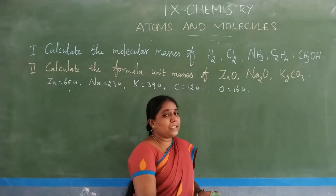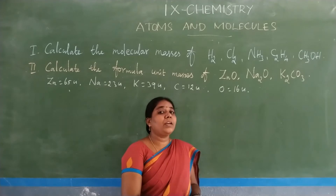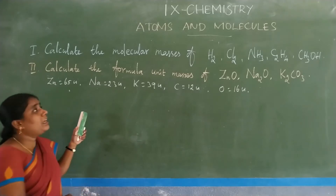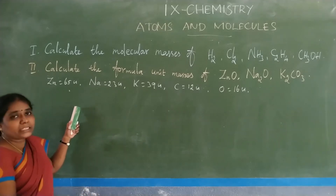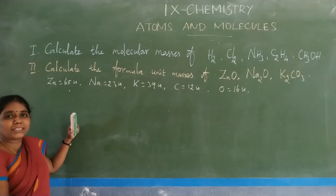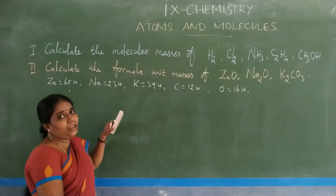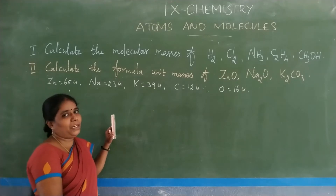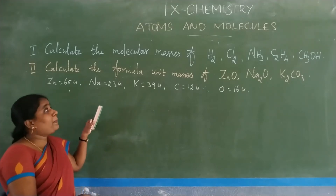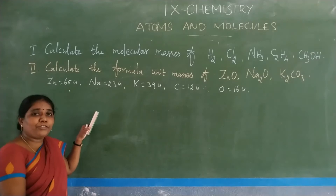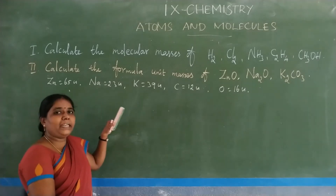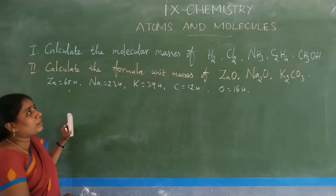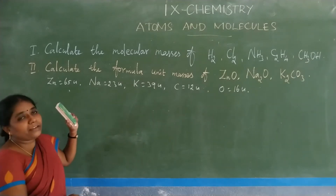First, let's review: what is called molecular mass and what is formula unit mass? Molecular mass is the sum of atomic masses of all the atoms present in a molecule. We represent molecular mass with the unit U — unified mass. Based on that, we are going to calculate the molecular mass of given compounds.